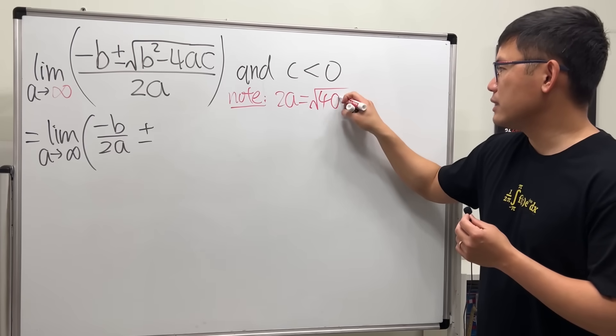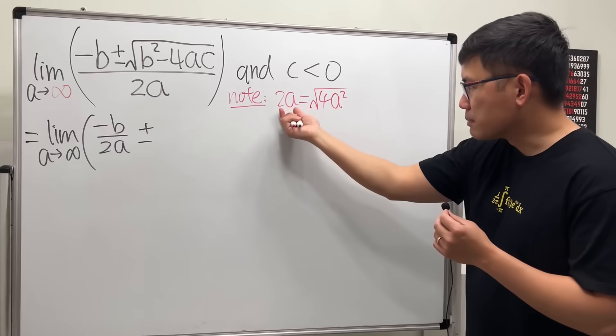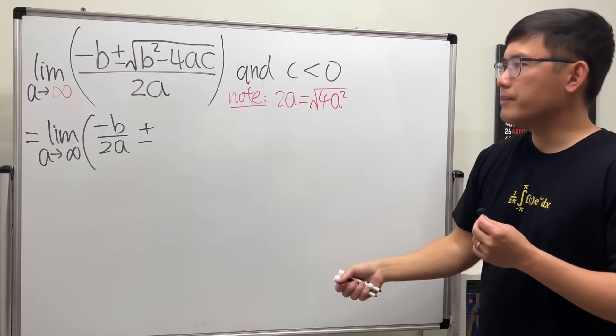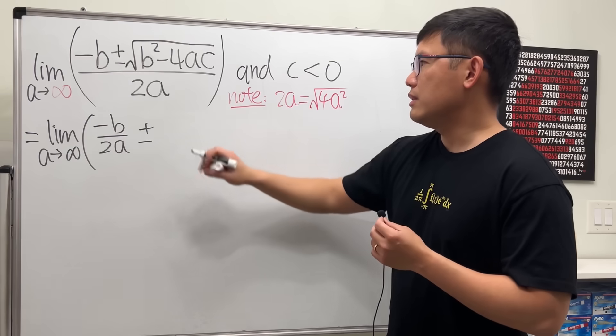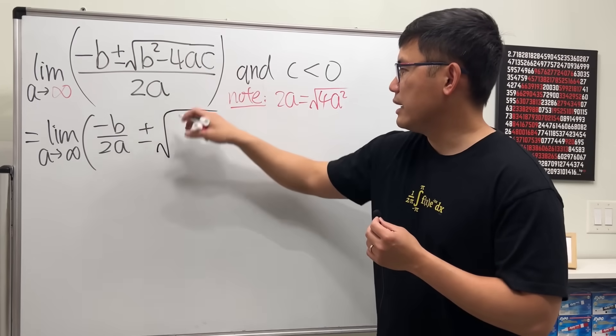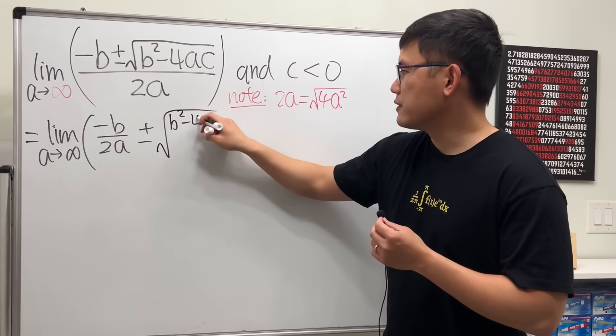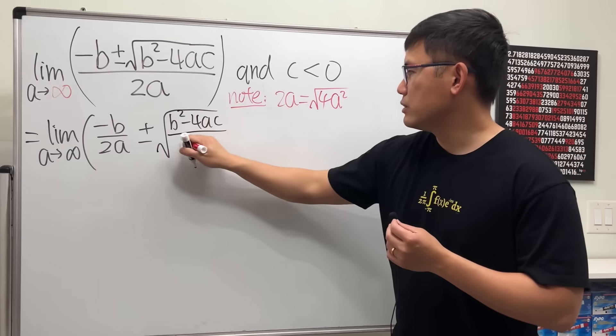Little note: 2a equals square root—well, 2 inside the square root is 4, and then a inside the square root is a squared. Because a is approaching positive infinity this is positive, so this is okay. I can just put that inside here and the whole thing is positive.